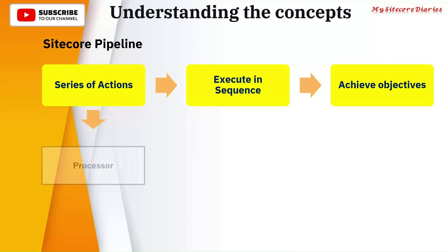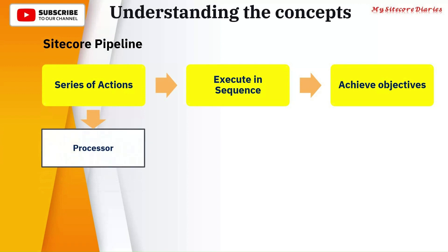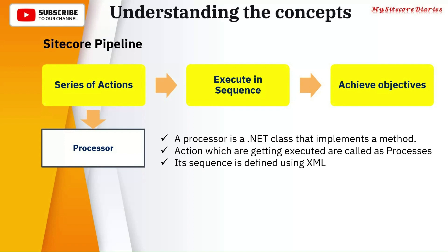The actions which are getting executed are called Processors. So what is a Processor? A Processor is a .NET class that implements some method — it is a class which implements some action. The sequence of these Processors is defined using XML.